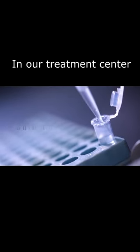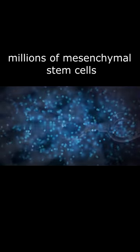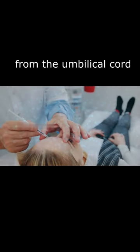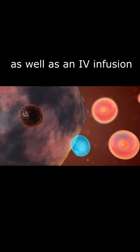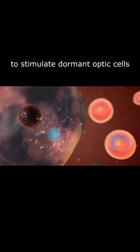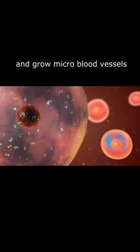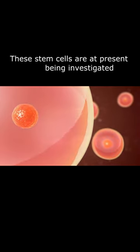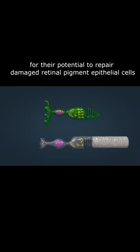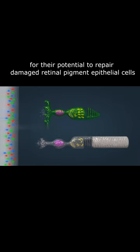In our treatment center, millions of mesenchymal stem cells from the umbilical cord are inserted through retrobulbar injection, as well as an IV infusion to stimulate dormant optic cells and grow microblood vessels. These stem cells are at present being investigated for their potential to repair damaged retinal pigment epithelial cells.